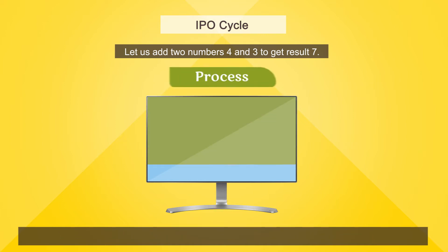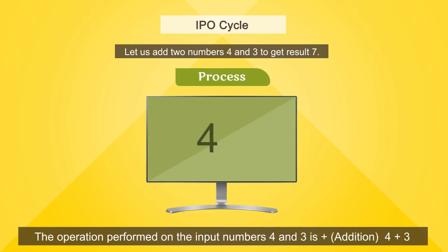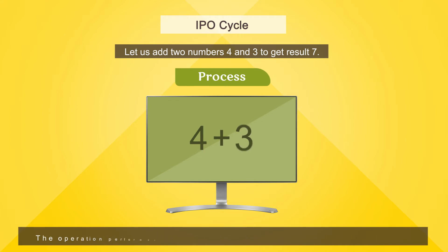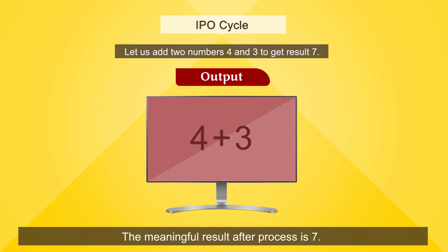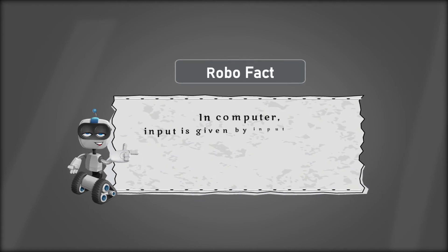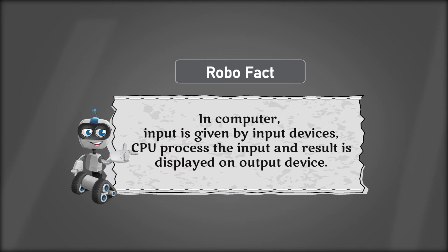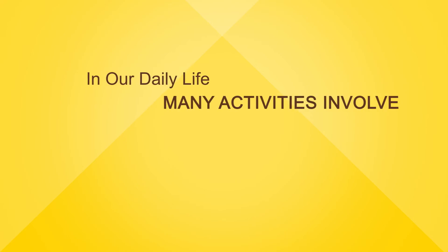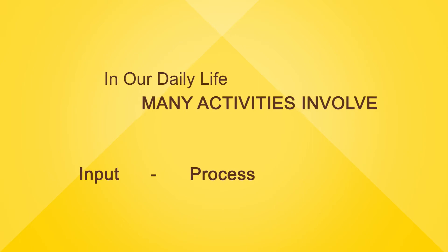For example, Input: numbers 4 and 3, with the operation of addition — 4 plus 3. Input is done via input devices, the CPU processes the input, and the result is displayed on the output device.